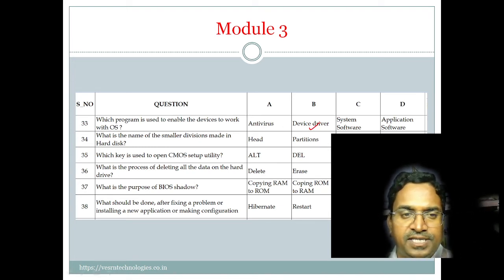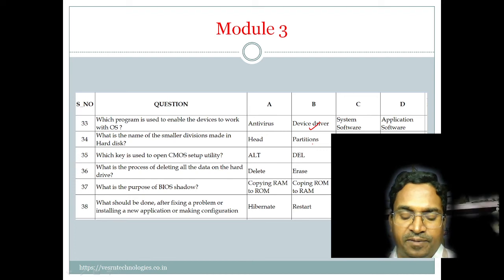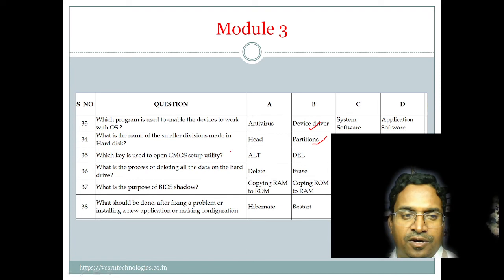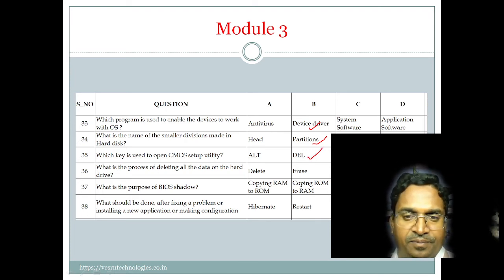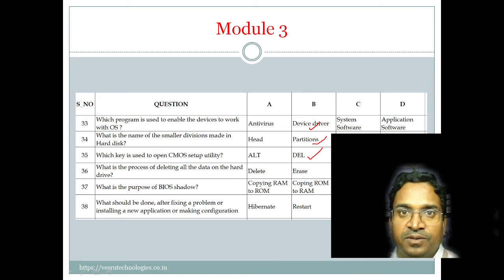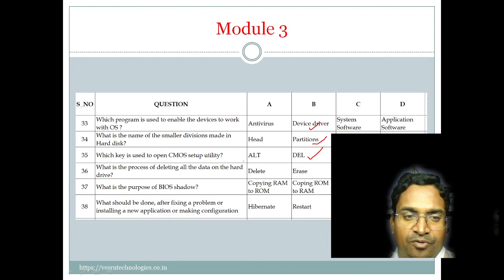What is the name of the smaller divisions made in a hard disk? The answer is partitions. Which key is used to open the CMOS setup utility? The answer is the Delete key — press Delete during booting to open CMOS setup.